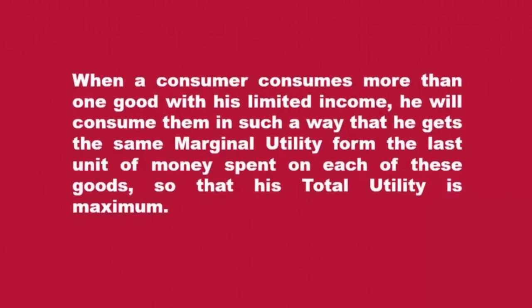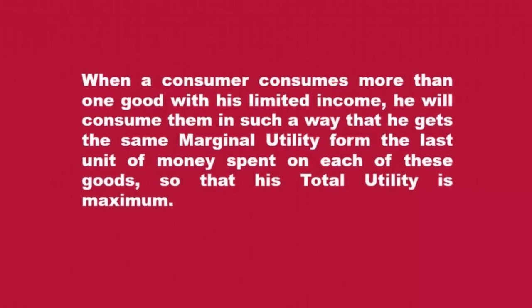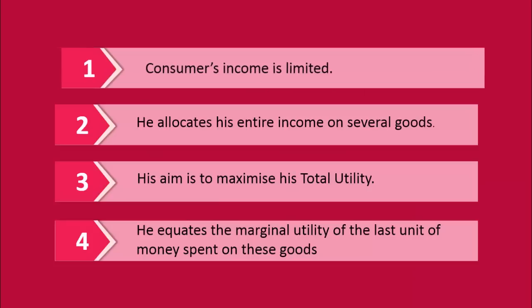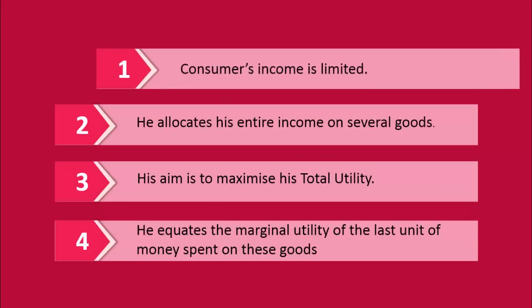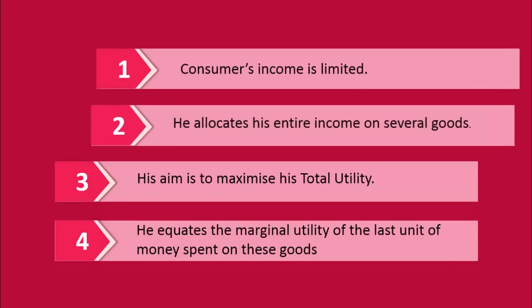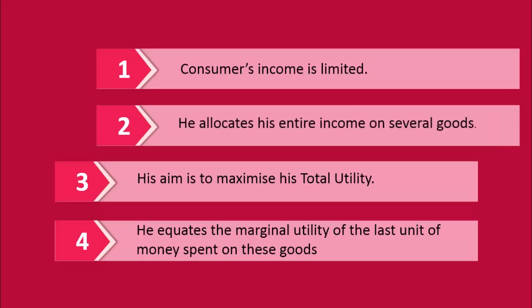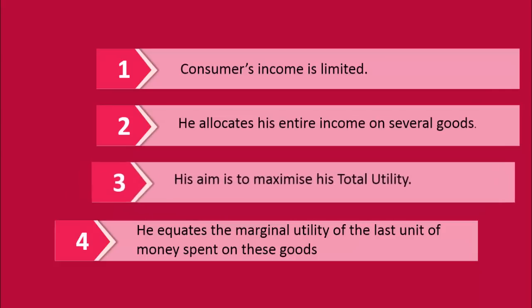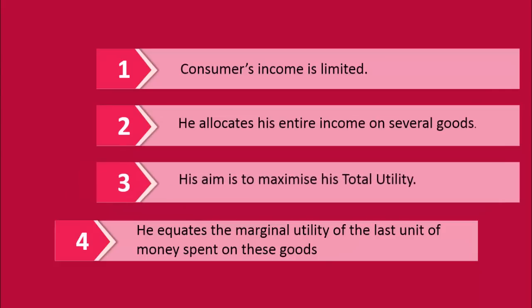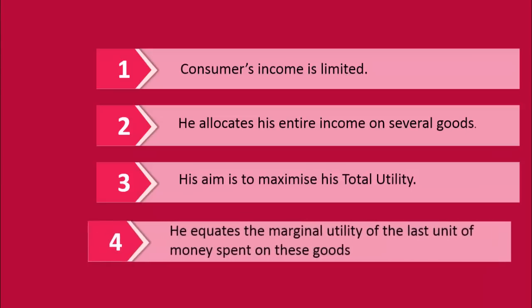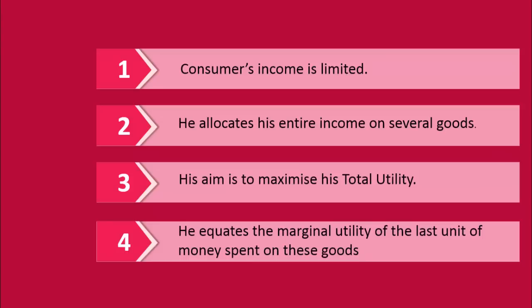The points to understand about this law are: the consumer's income is limited, he allocates his entire income on several goods, and his aim is to maximize his total utility. To achieve this, he equates the marginal utility of the last unit of money spent on these goods.